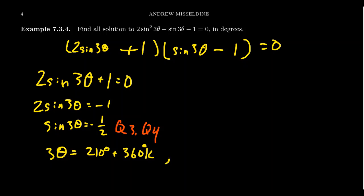The solution in the fourth quadrant will, of course, be 360 take away 30 degrees, which is 330 degrees, plus 360k, like so. And so then let's move on to the second factor here.